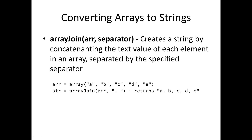In addition to manipulating an array, there are ways to convert arrays to other data types. Array join will convert your array into a string. It takes your array and also the separator you want to use to concatenate everything together. In this example, it passes in a comma, so this a, b, c, d, e array is going to return a comma-separated string — 'a, b, c, d, e' — as a string. This will look similar to those familiar with JavaScript, which has an array join as well.